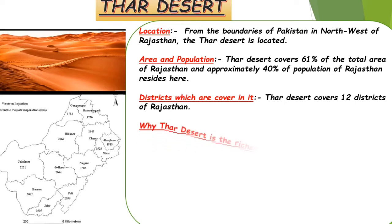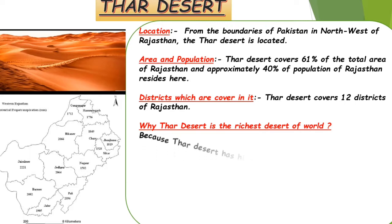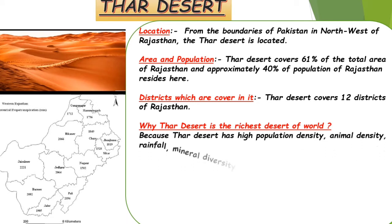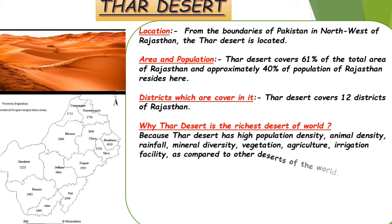Now, an important question: why is the Thar Desert called the richest desert of the world? Because the Thar Desert has high population density, animal density, rainfall, mineral diversity, vegetation, agriculture, and irrigation facilities compared to other deserts. Due to higher rainfall, mineral diversity, agriculture, and available irrigation facilities, the Thar Desert is called the richest desert of the world.